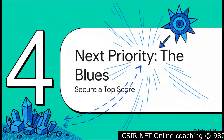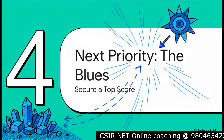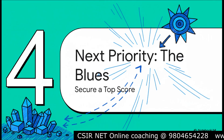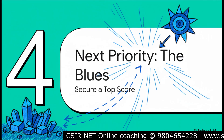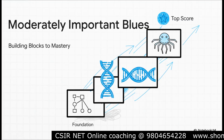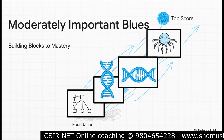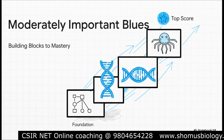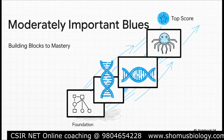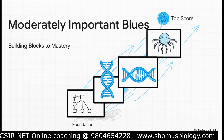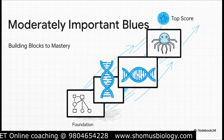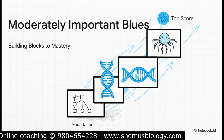Once you have a rock-solid grip on those green topics, it's time to build on it. The blue topics are your next stop — these are what will give you a competitive edge and help you lock in a top score. These three topics pop up often enough that they're a really smart investment of your time: human genetics (think pedigree analysis), mutation (types and mechanisms), and microbial genetics. Think of these as the topics that take you from just getting by to really excelling.